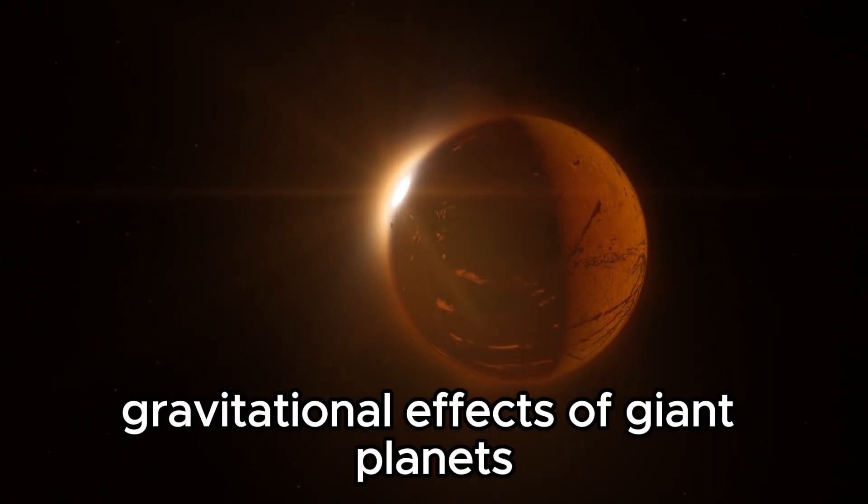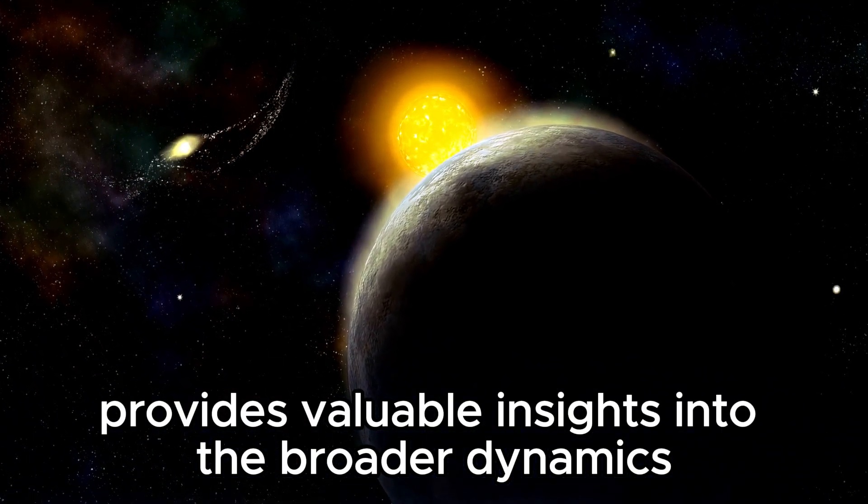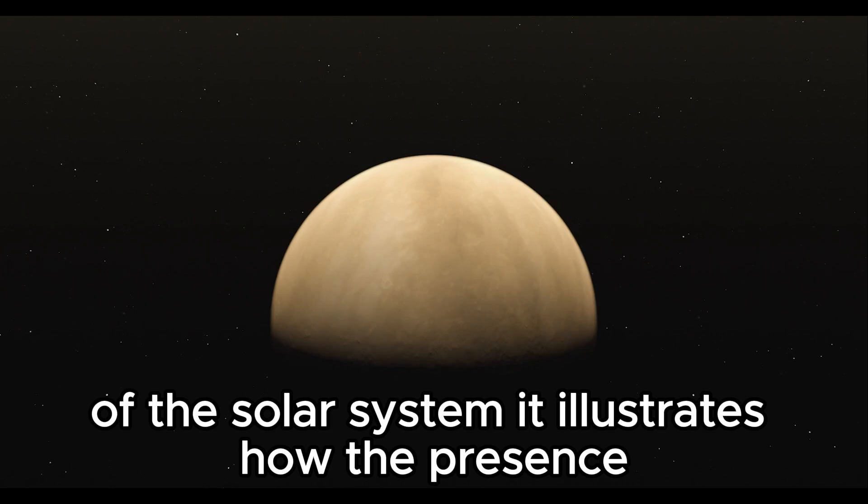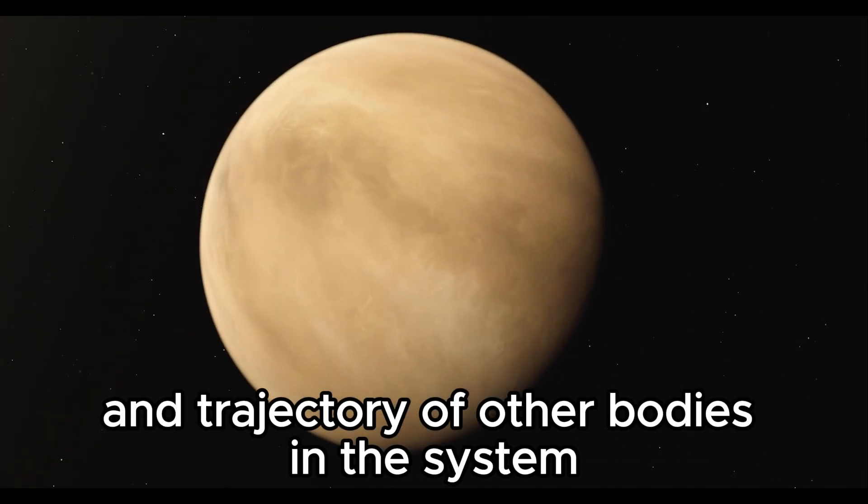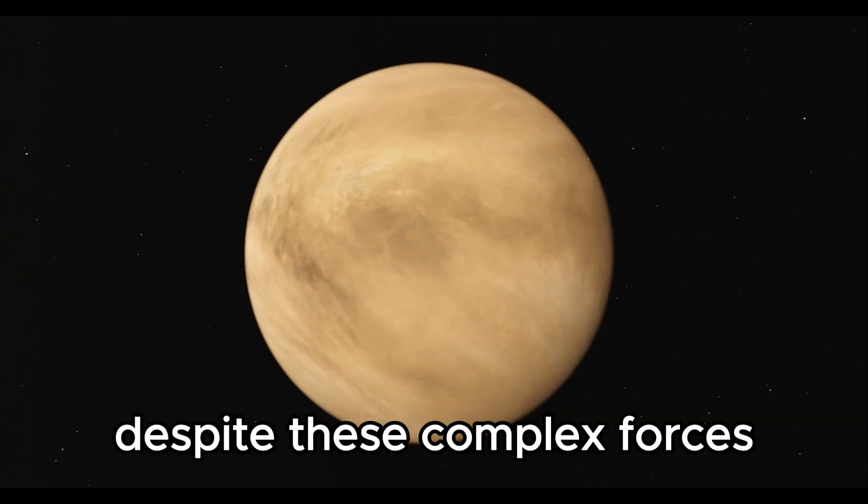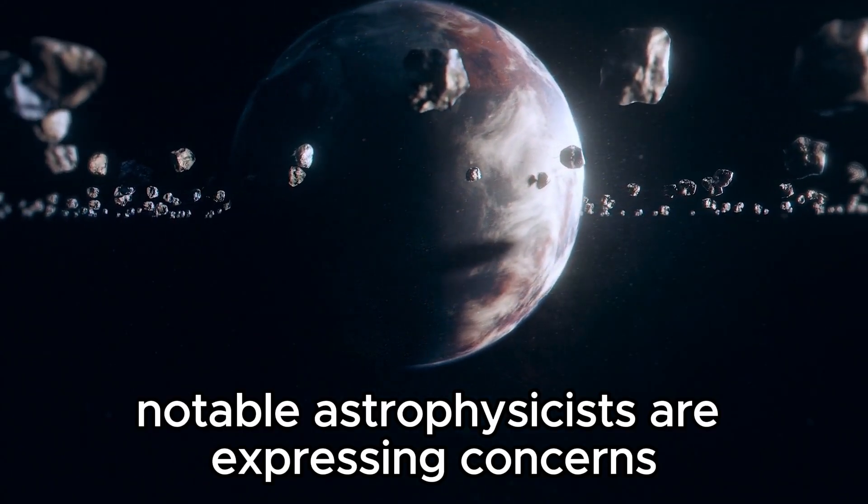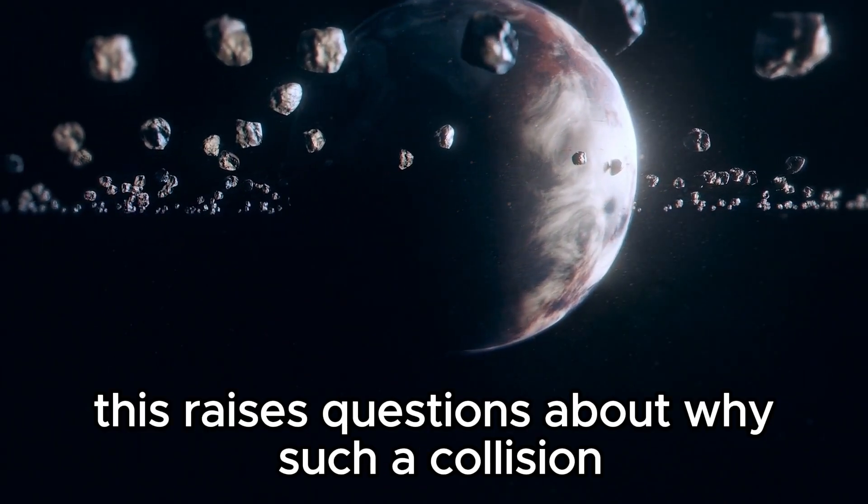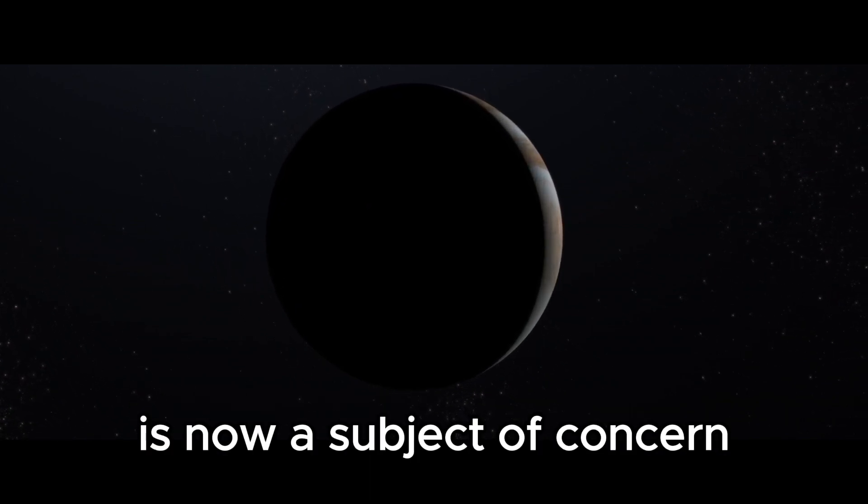Understanding the gravitational effects of giant planets on Pluto's orbit provides valuable insights into the broader dynamics of the solar system. It illustrates how the presence and composition of each planet can influence the stability and trajectory of other bodies in the system. Despite these complex forces, notable astrophysicists are expressing concerns about a potential collision between Pluto and Neptune. This raises questions about why such a collision, which seems unlikely given these complex factors, is now a subject of concern.